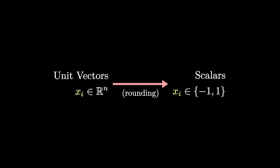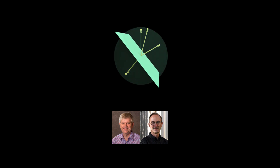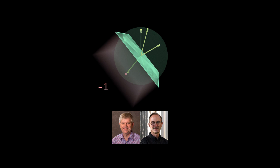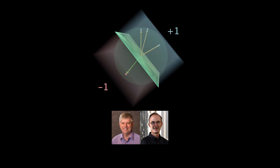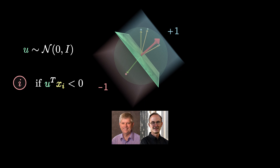This step is called rounding, and it's usually the most challenging step in any semi-definite relaxation. Goemans and Williamson proposed a very elegant way to do it. Since the vectors have norm one, we can view them as points on the sphere. From there, we simply generate a random hyperplane and assign the value minus one to all vectors that fall on one side, and plus one to the others. Concretely, you generate the normal vector to this hyperplane from a Gaussian distribution, and consider its inner product with each vector xi. If the inner product is negative, assign minus one; if positive, assign plus one.